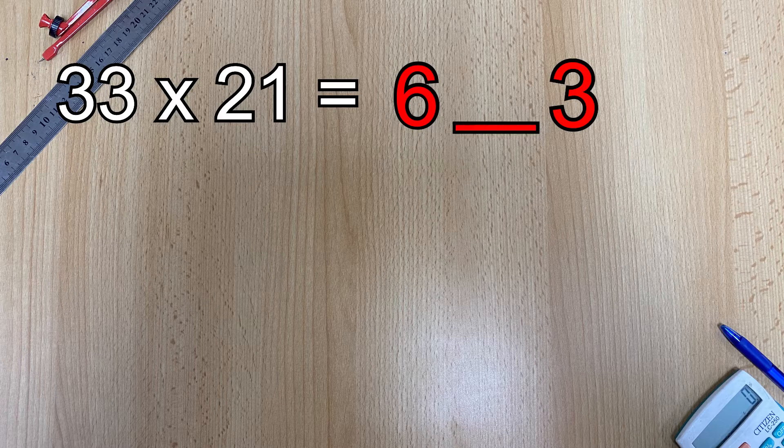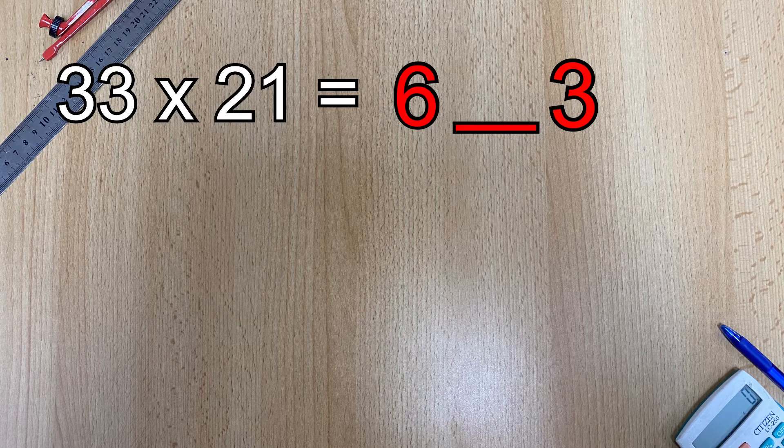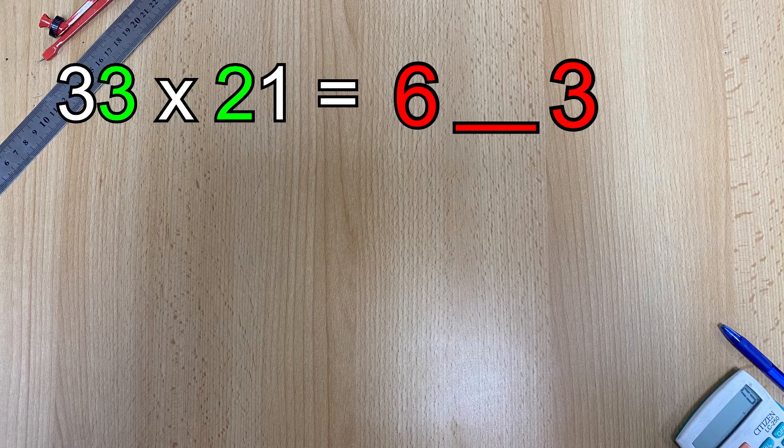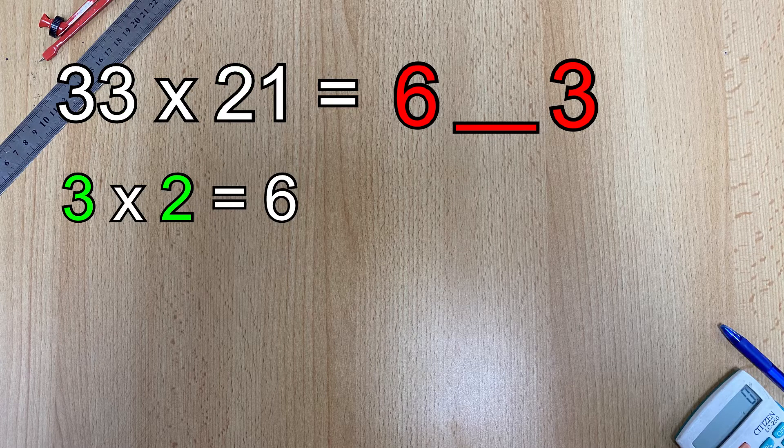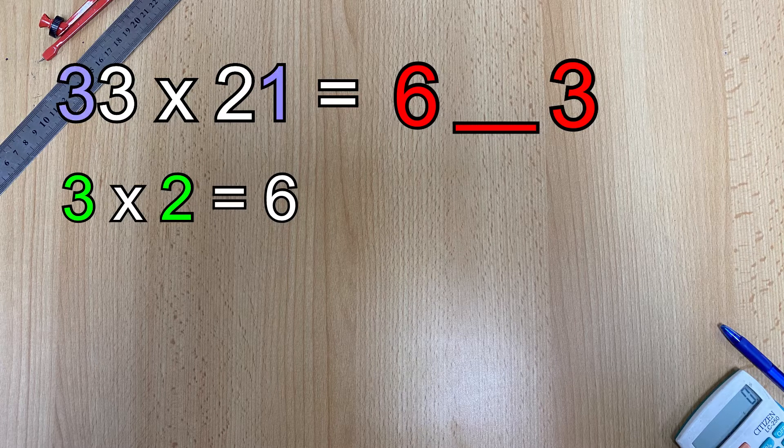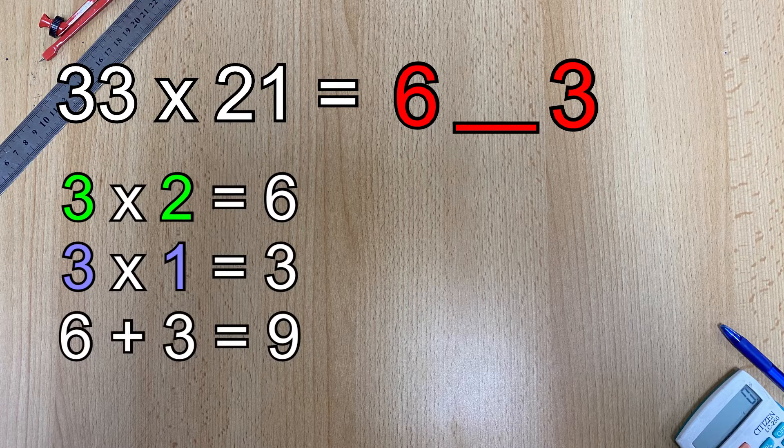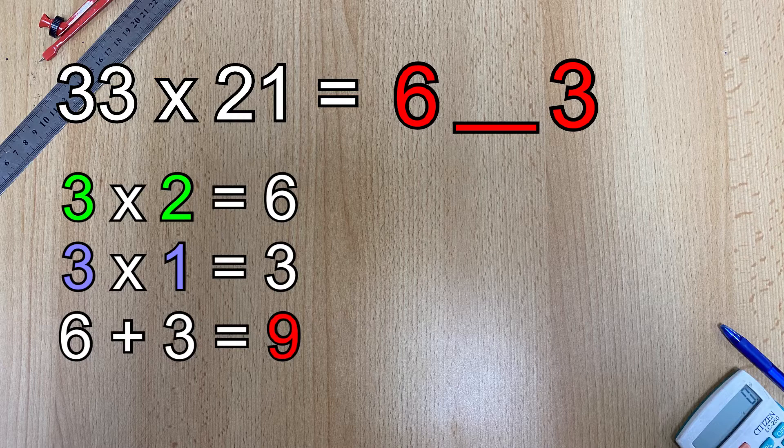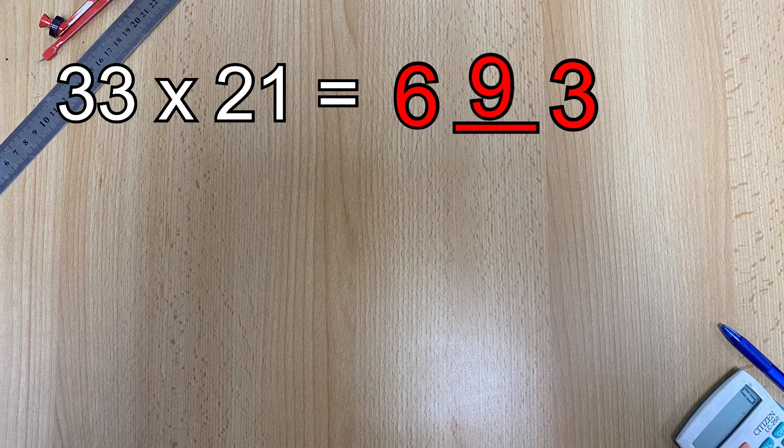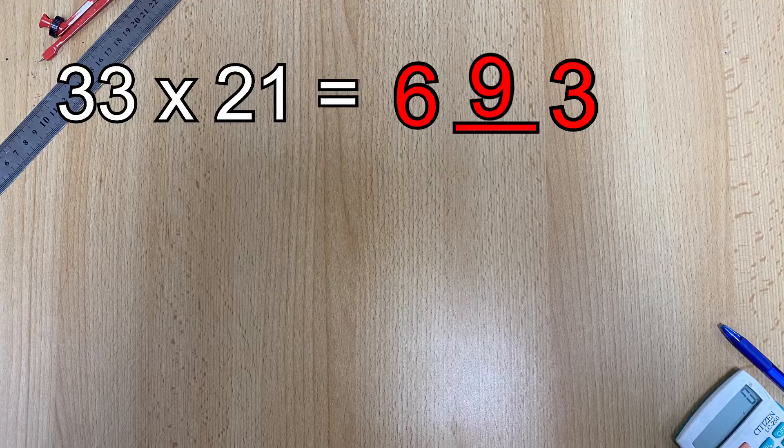To find the numbers in the gap you need to first multiply the two digits in the middle and then multiply the two exterior numbers. Once you've done that you just add the two numbers together and whatever the total is you move that number into the gap and hey presto there's your answer.